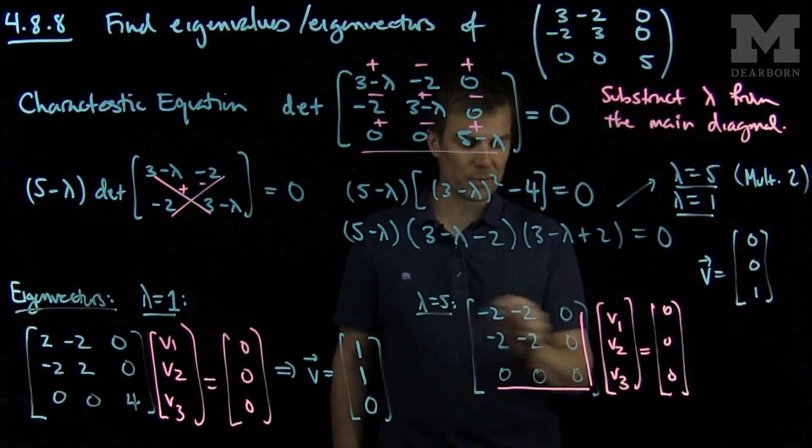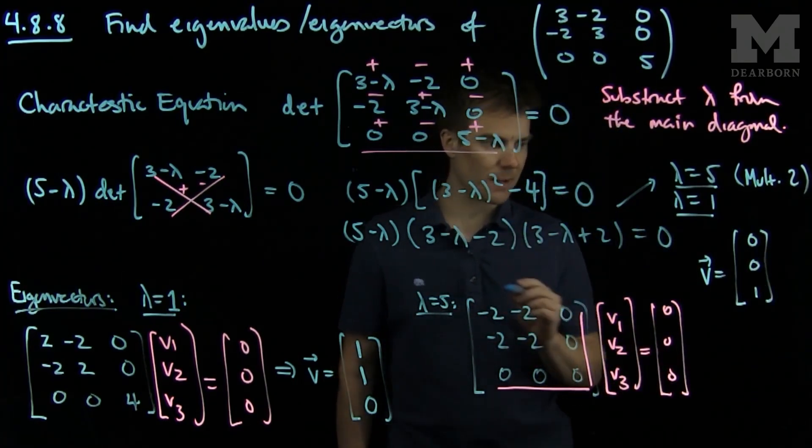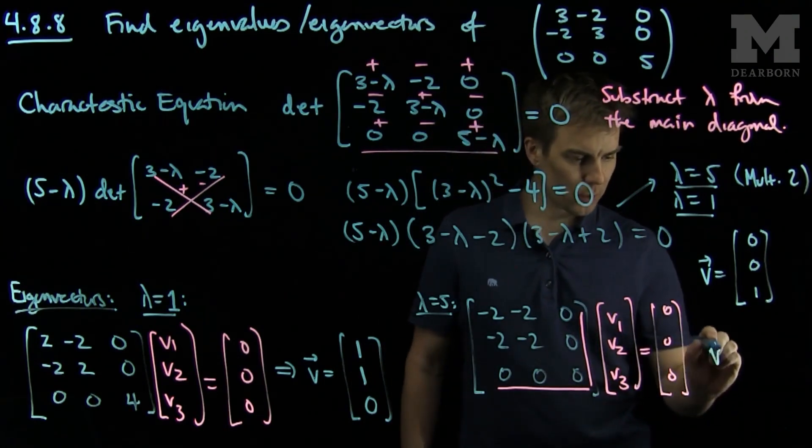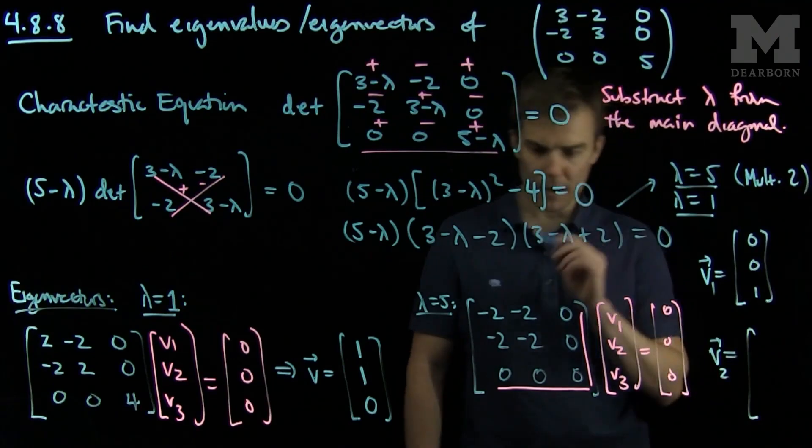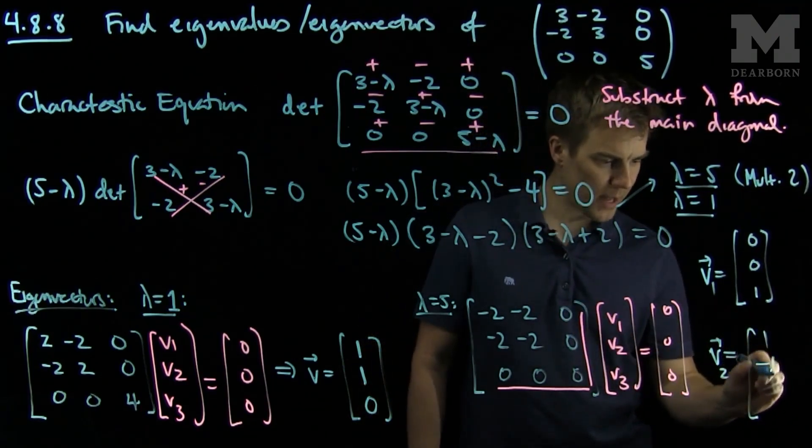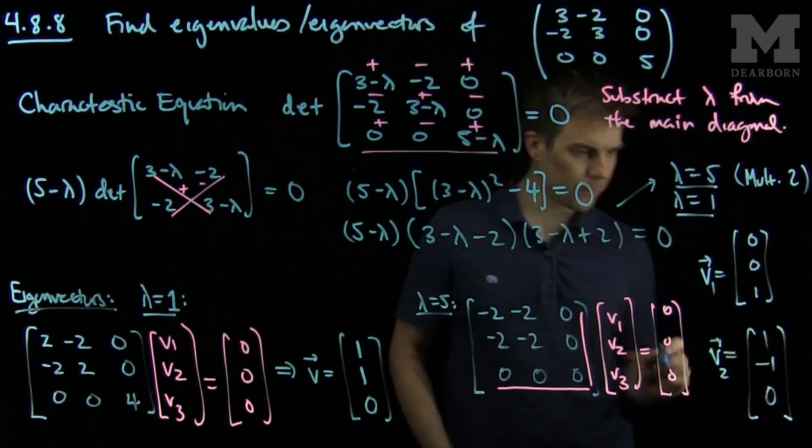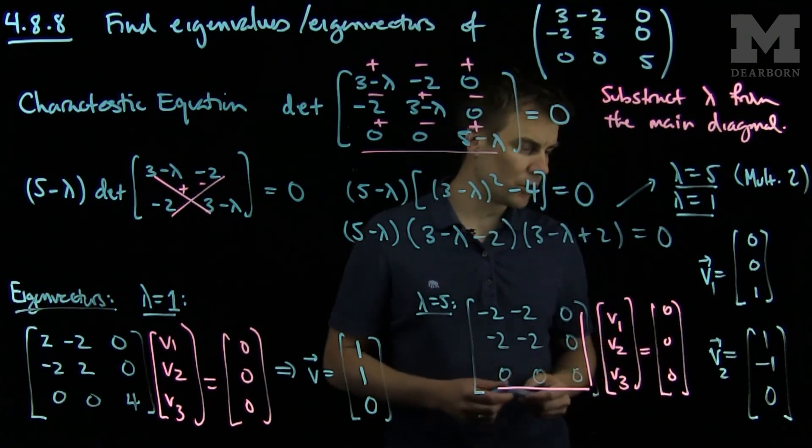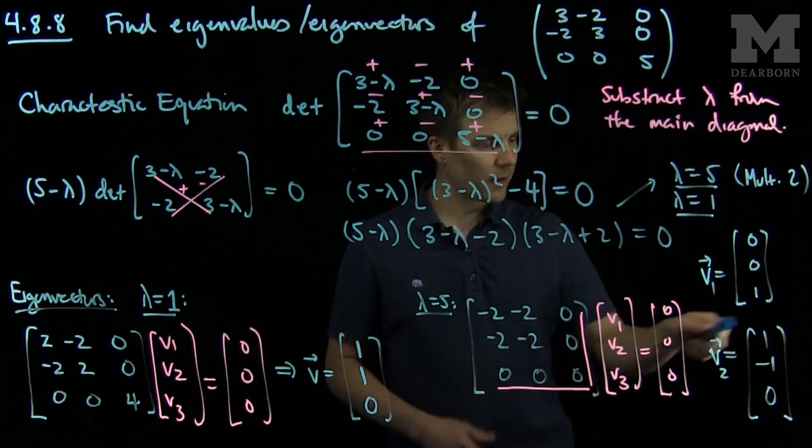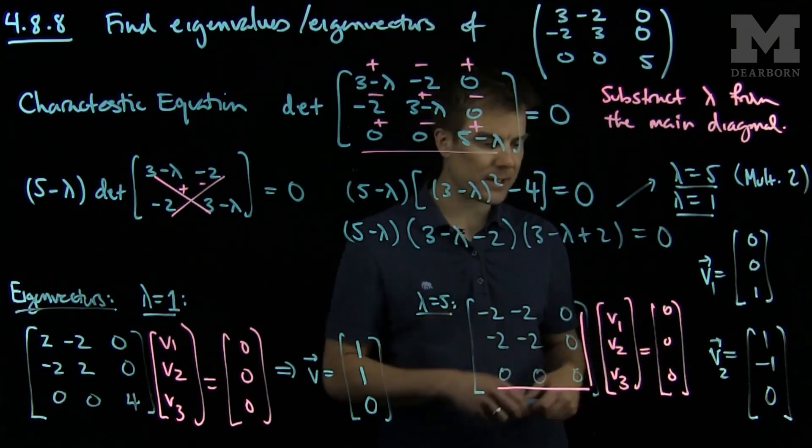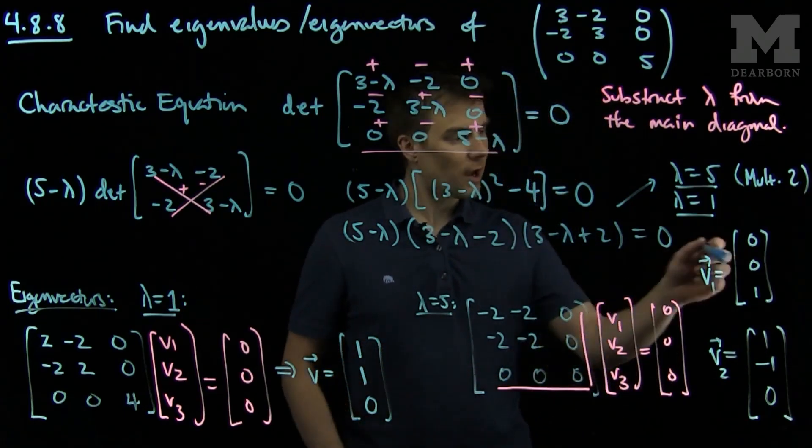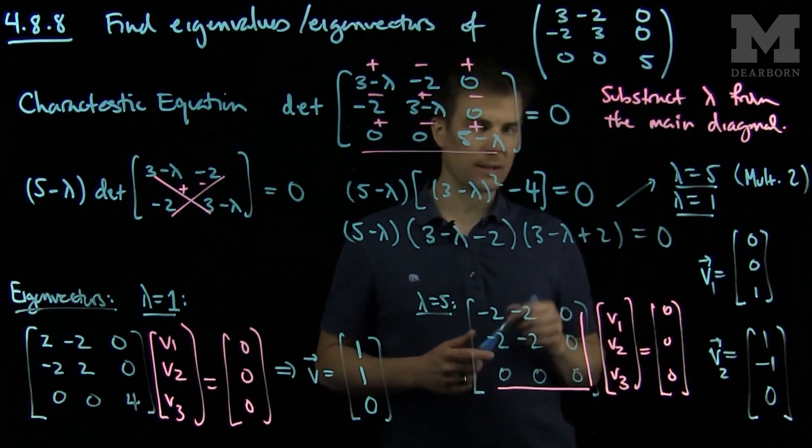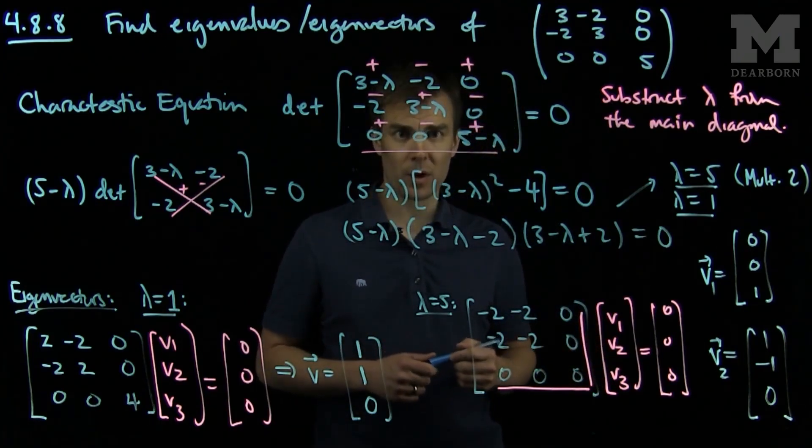As no matter what v3 is, it will always be zeroed out by this last column. I can also choose the vector 1, negative 1, and 0. And these two vectors, v1 and v2, are independent of each other. And if I choose 1, negative 1, 0, I see that that choice will give me 0, 0, 0 as well. So I have found two eigenvectors corresponding to lambda equals 5, and one eigenvector corresponding to lambda equals 1.